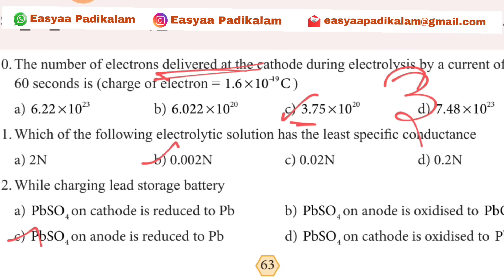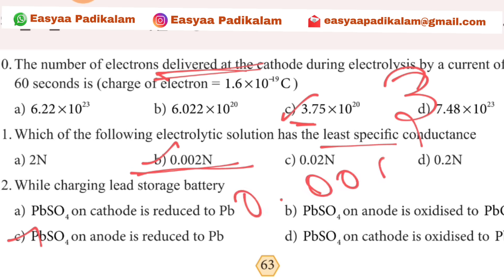Which of the following hydrochloric acid solution has the least specific conductance? If you have the least option, we have the least option. That option is the answer.